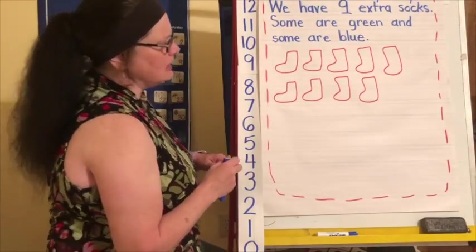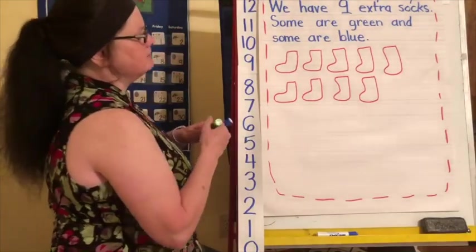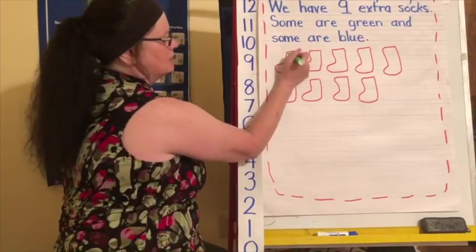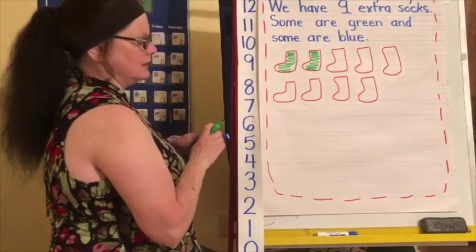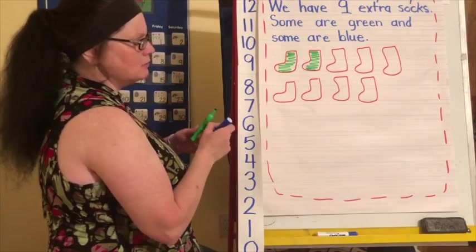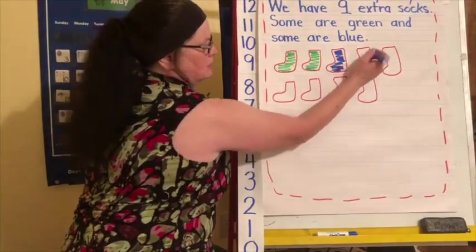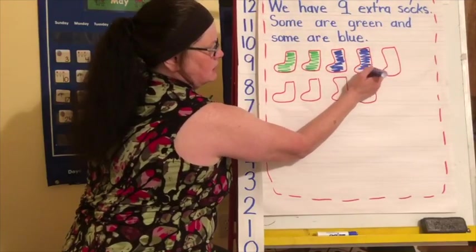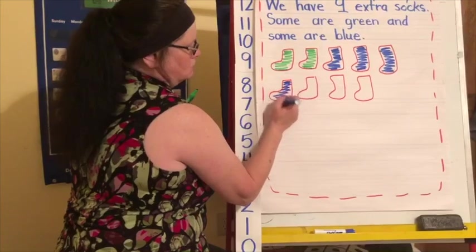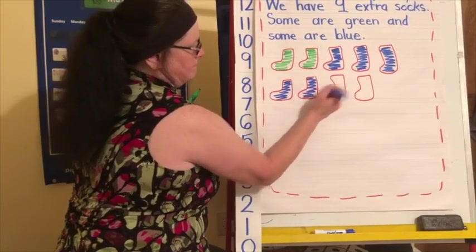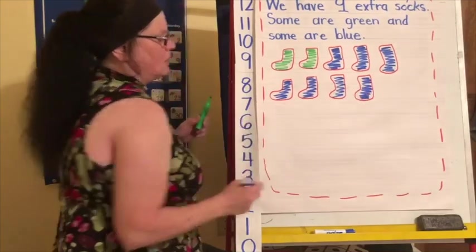Now, it says some are green. So it doesn't tell us how many. So we get to decide. Hmm, I think I'll make two of them green. The rest are blue. So I'm just going to color really quickly because I don't want to spend a lot of time during math doing coloring. But I want to make sure we know that these ones are the blue.